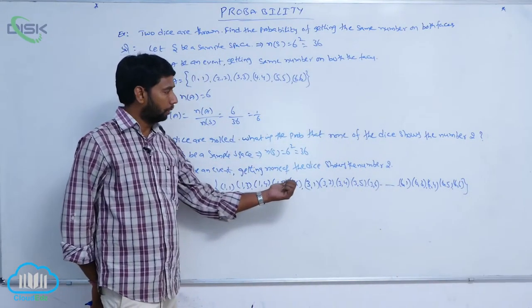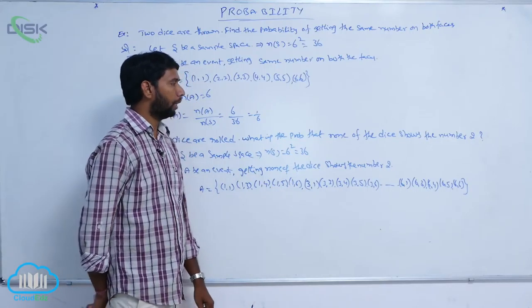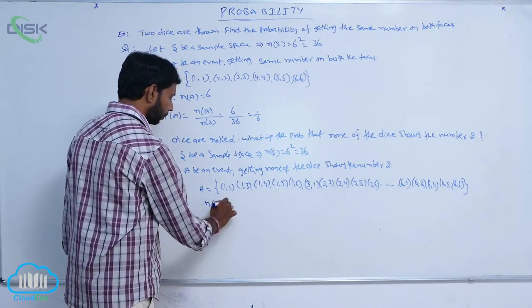Each of the 5 possible values can pair with any of the 5 values, giving N of A equal to 25.